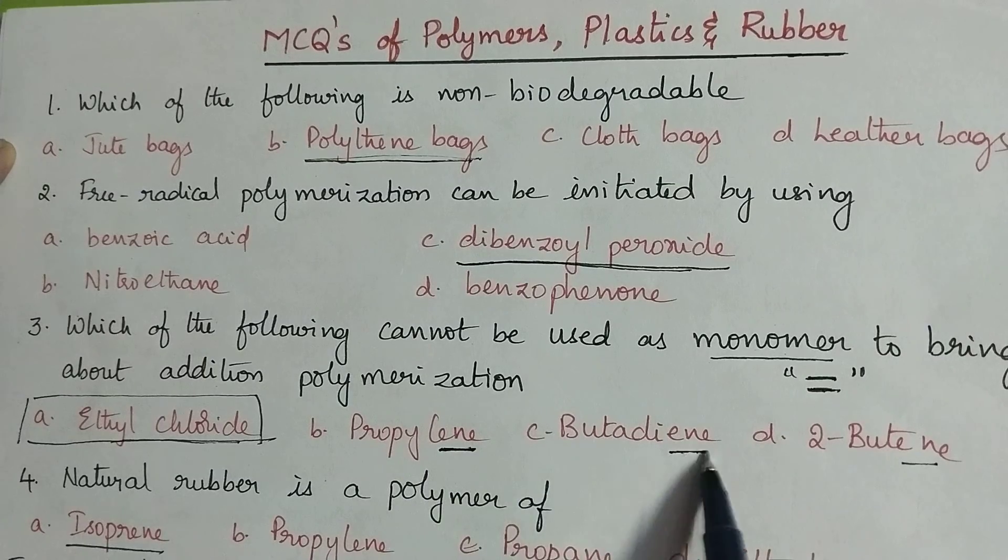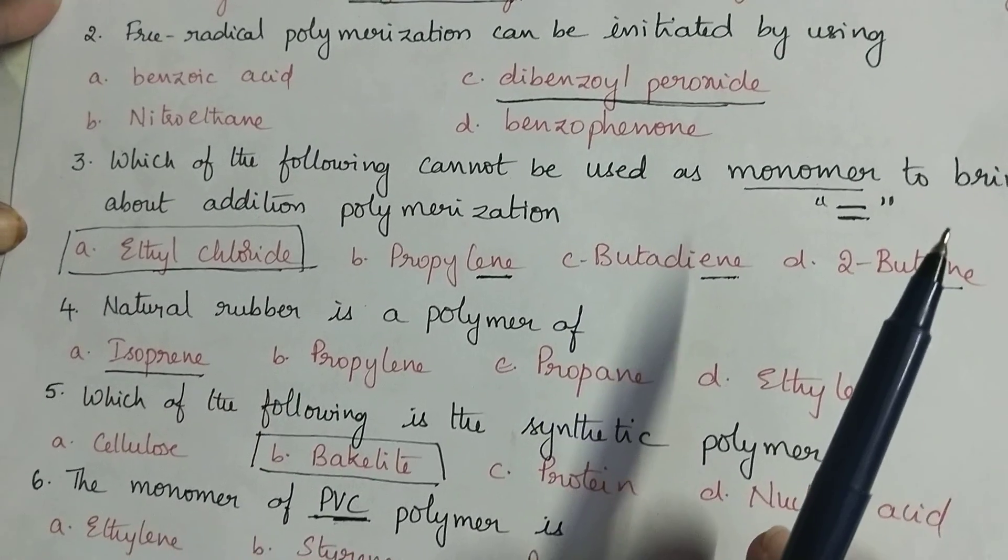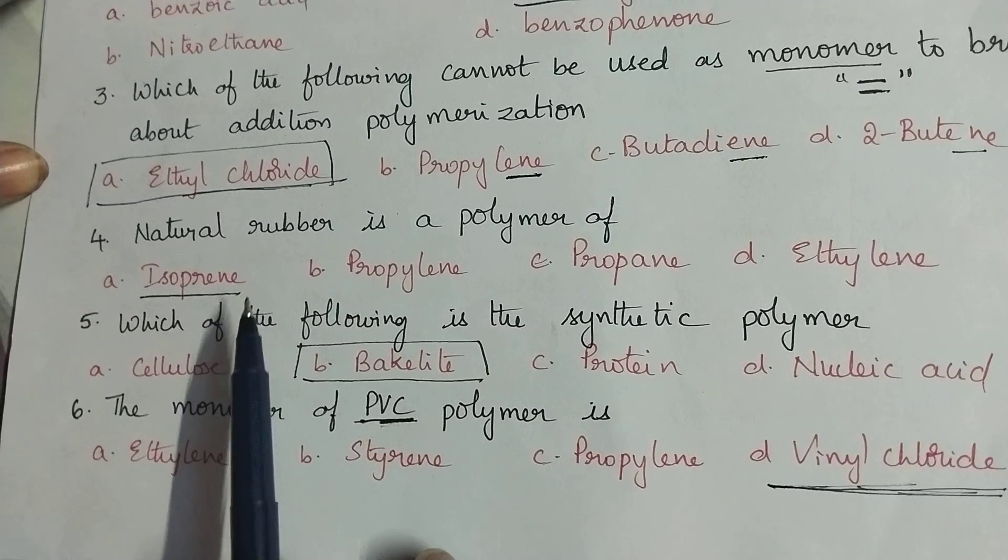Natural rubber is a polymer of isoprene, so natural rubber contains isoprene units.